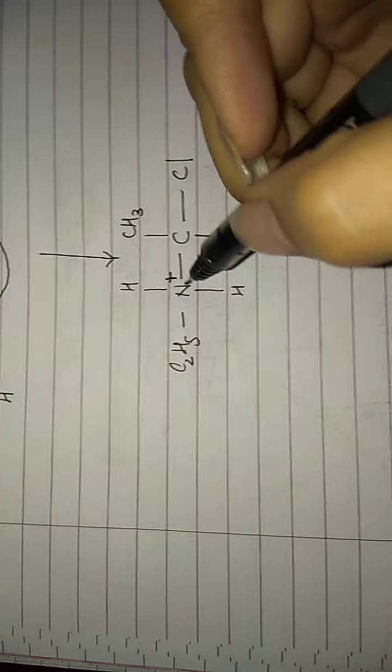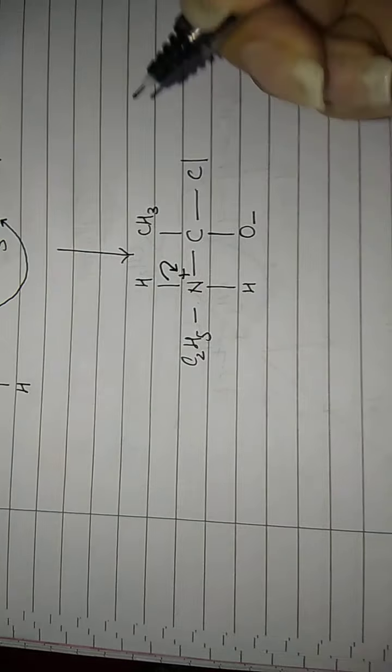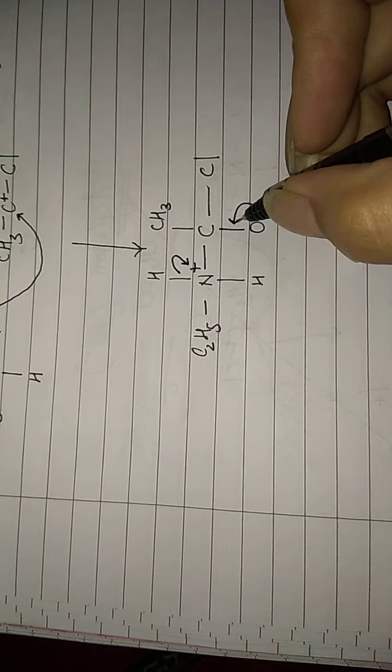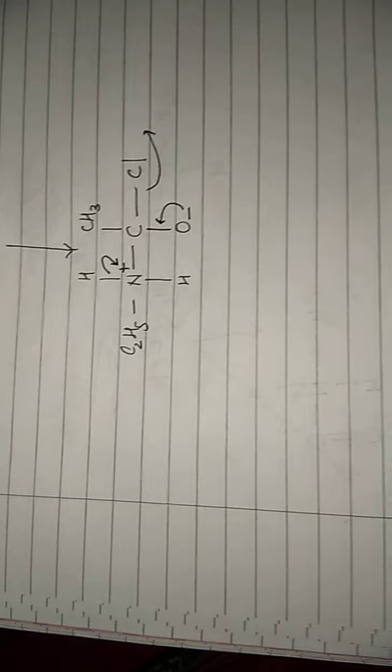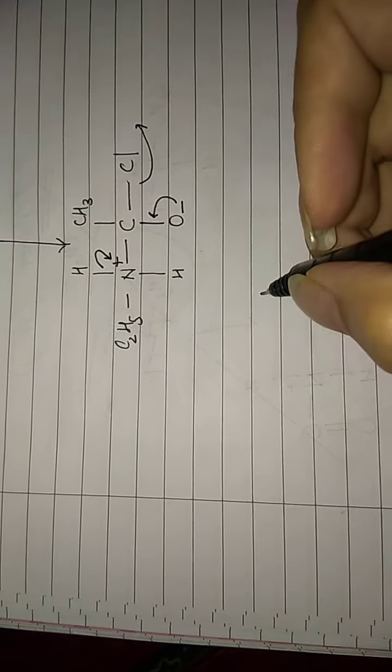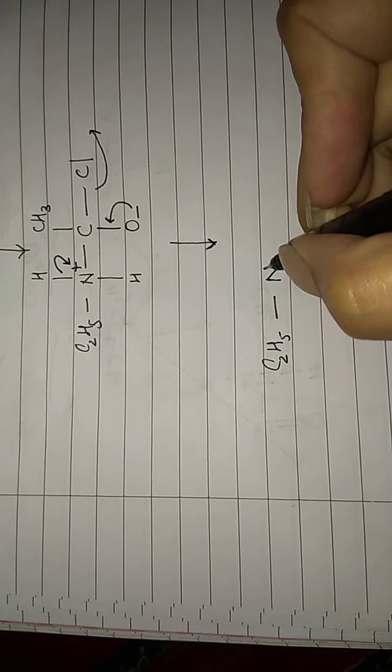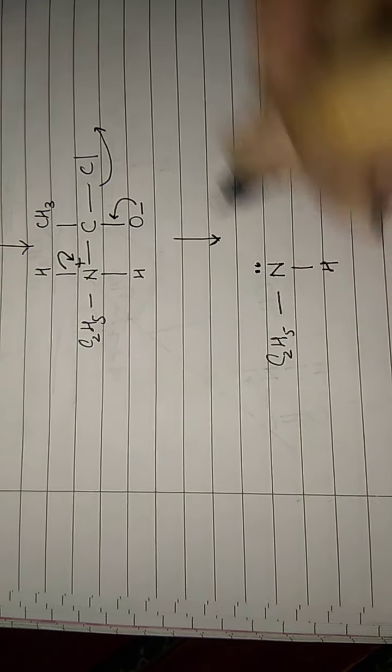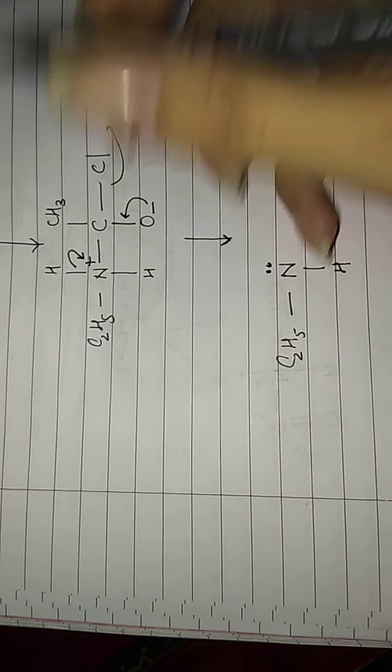Because there are four bonds around this nitrogen atom, it will develop a positive charge. Your next step will be to disperse this positive charge. The nitrogen takes away this electron pair from hydrogen. This negative charge comes back here to get stabilized, and Cl leaves in order to satisfy the valency of carbon.